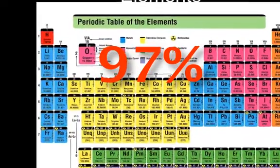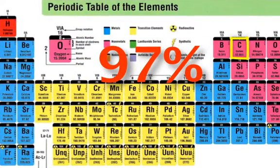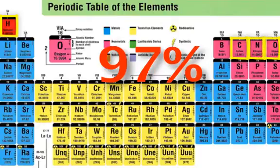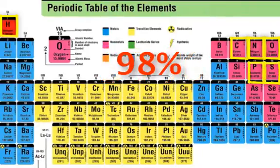Those four elements are carbon, hydrogen, nitrogen, and oxygen. Add phosphorus, sulfur, and calcium, and you're closer to 98 percent of the elements of living things.